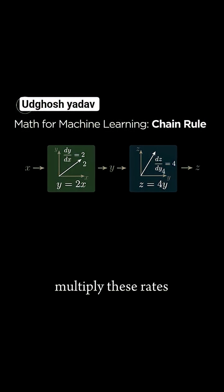We can then multiply these rates of change together to get our overall rate of change. So 2 times 4 equals 8, or dy/dx times dz/dy equals dz/dx.